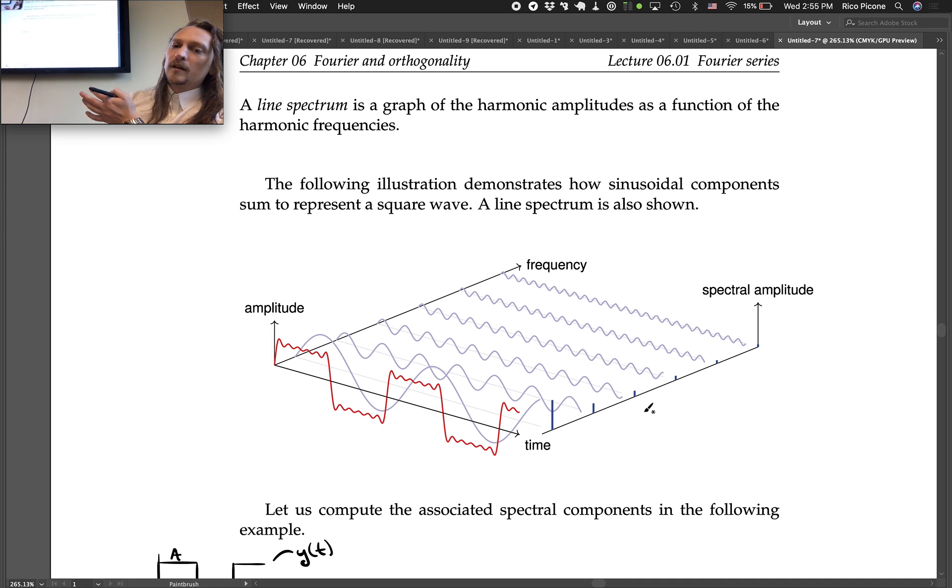What we're computing is this is the c1, this is the c3, this is the c5. What we're seeing there are the amplitudes of those sinusoids that sum up to give us the full representation.